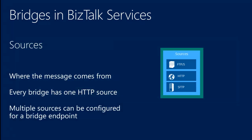A source is literally your message source — from where your messages arrive and reach the bridge. Every bridge, by default, has one HTTP source. So whenever you deploy a bridge, you will be providing an HTTP endpoint, and that HTTP endpoint is where customers or users can push in messages to get them processed through the bridge. You can configure multiple sources for a bridge — one HTTP only, and others can be FTP, FTPS, or SFTP. These three are the current ones we support out of the box.